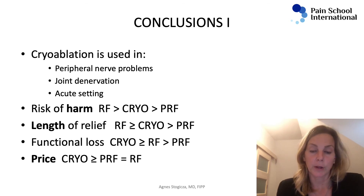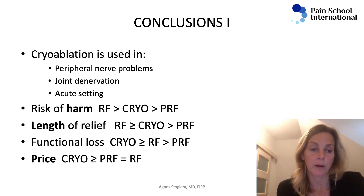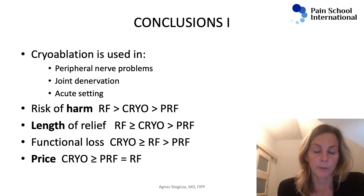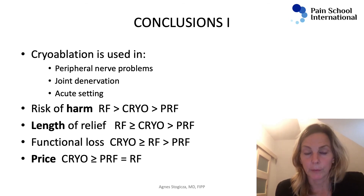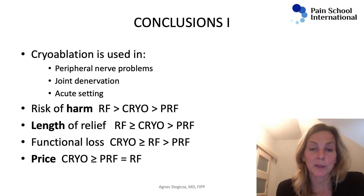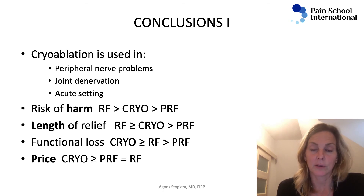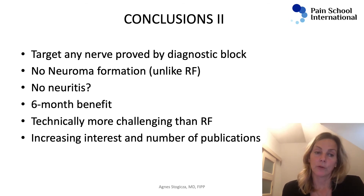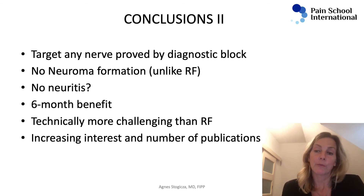The length of relief: radiofrequency lasts longer than cryoablation, but both last significantly longer than PRF. The functional loss is really complete anesthesia with cryo — patient may complain of complete numbness when you do, for example, infraorbital — a bit more than with radiofrequency and certainly more than with PRF. Price is changing slowly, but cryo seems to be the most expensive, though it's coming down to be cheaper and reaching radiofrequency and PRF. So you can target any nerve, there will be no neuroma formation, no neuritis, it gives you a six-month benefit, technically a bit more tricky than radiofrequency because of the bigger probe, and the number of publications is coming up.